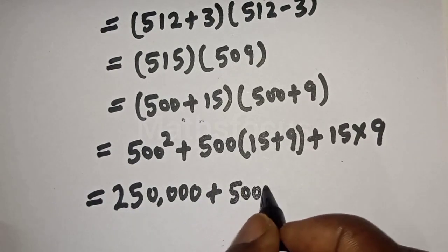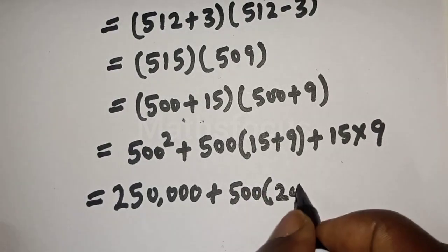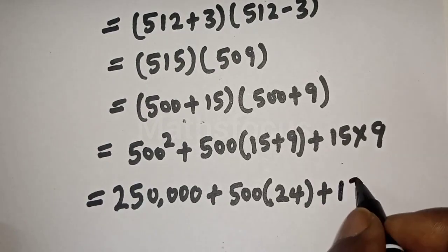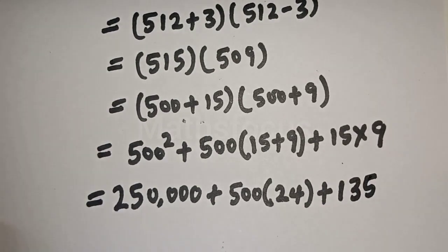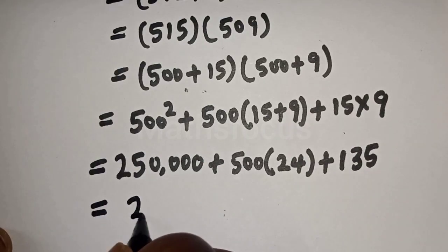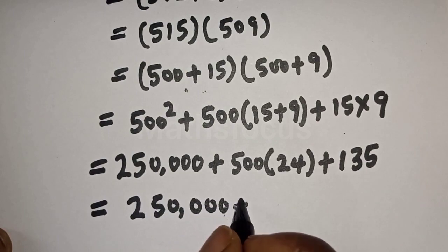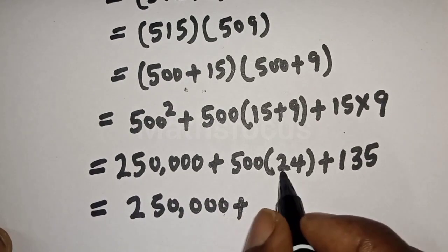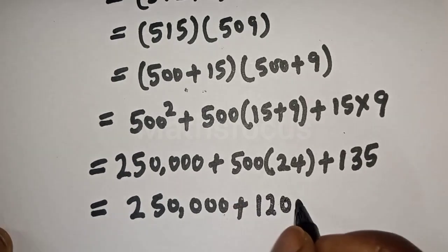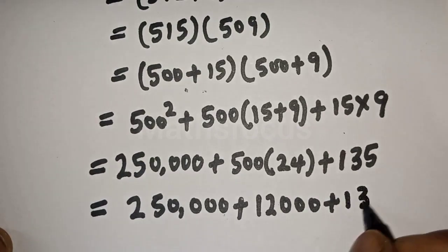This is equal to 500 squared is 250,000 plus 500 times 24 plus 135. And this is equal to 250,000 plus 500 times 24, that is 12,000 plus 135.